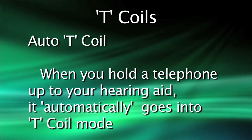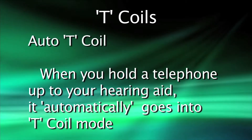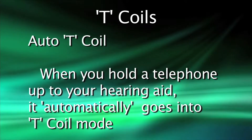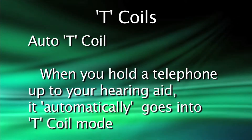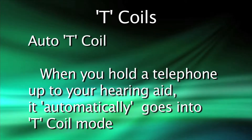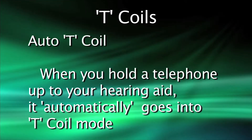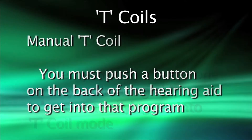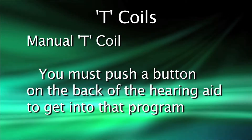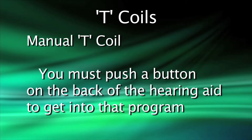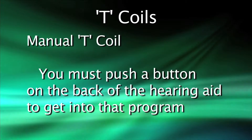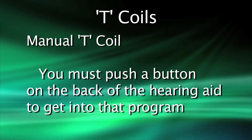When it comes to an auto T, that means that when you hold a telephone up to your hearing aid, it automatically goes into the T-coil mode. When you go to a manual T, that means that you actually have to push a button on the back of the hearing aid to get into that program.